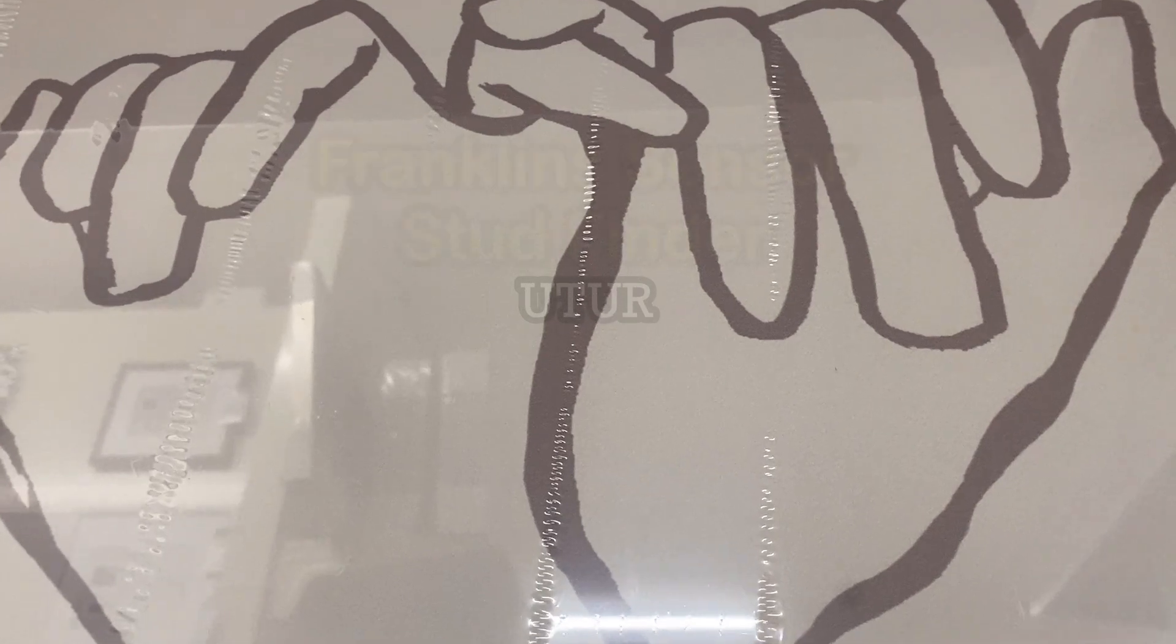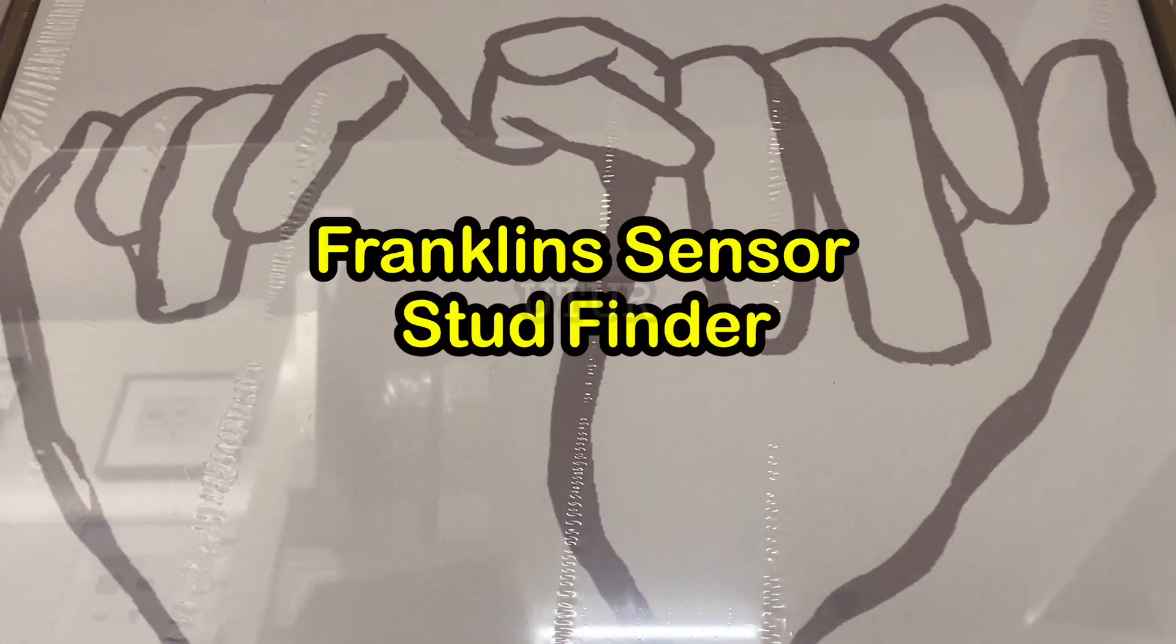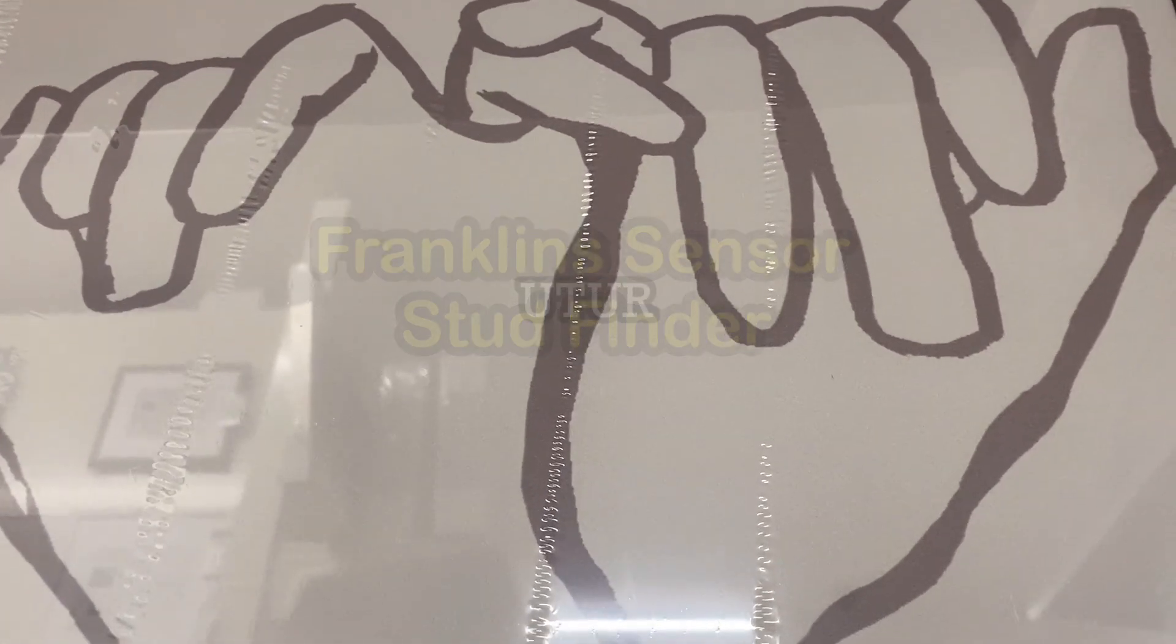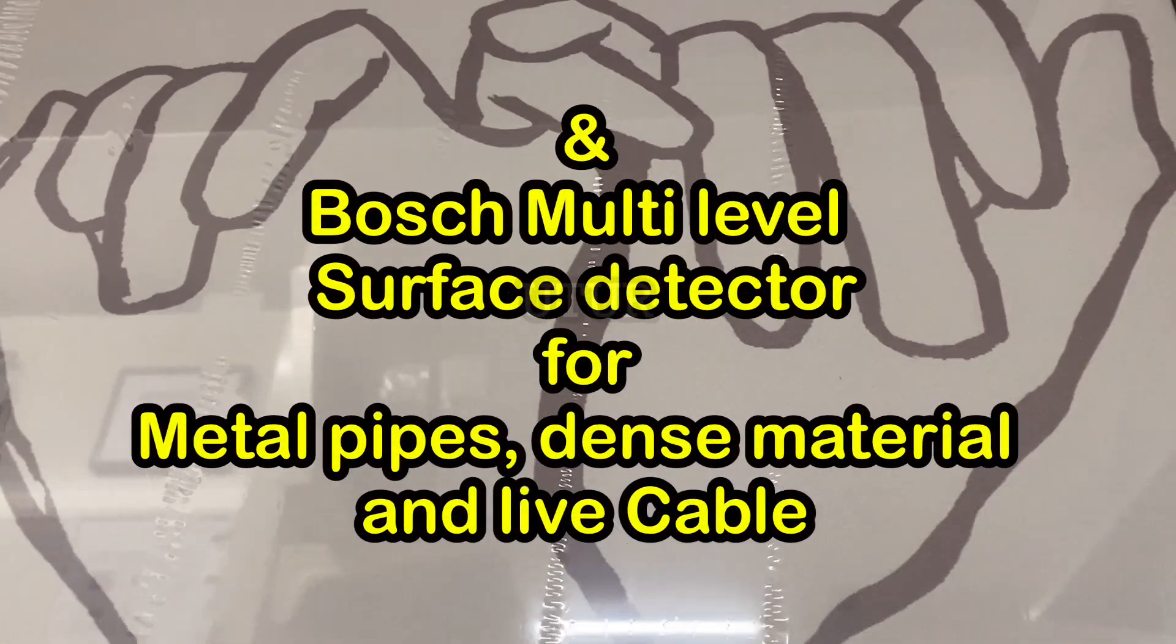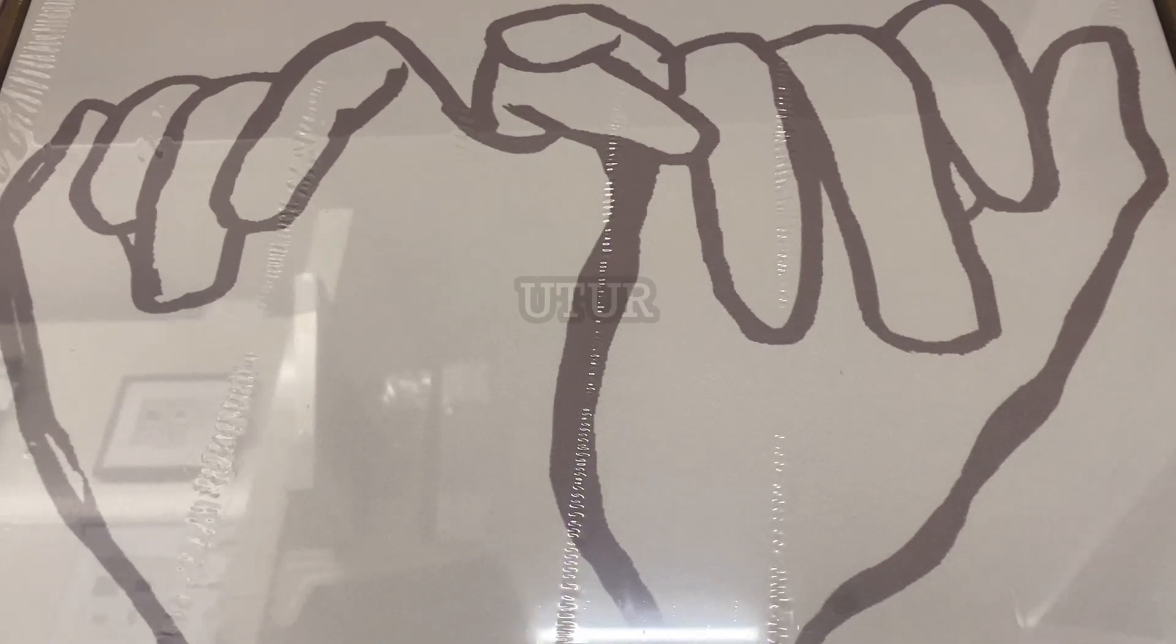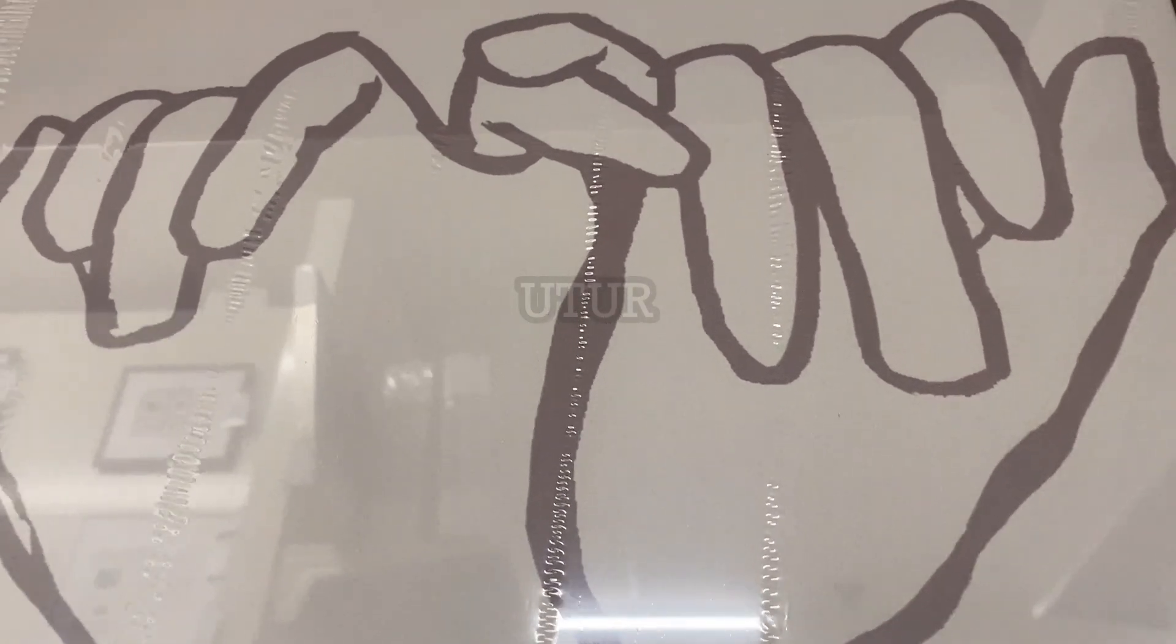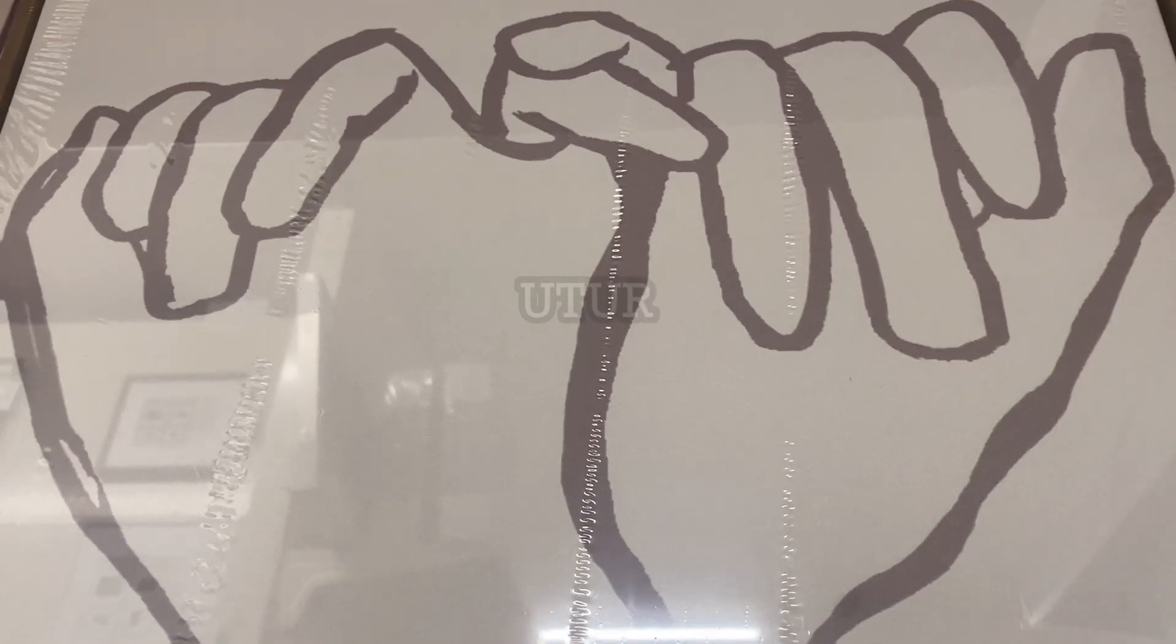You need devices like the Franklin's sensor, which can help detect wooden studs, and the Bosch Truvo multi-level surface detector, which can help you detect live cables, metal, pipes, and other materials with varying dense properties.